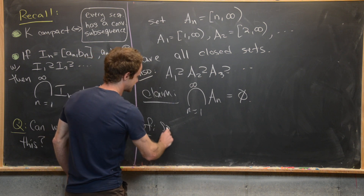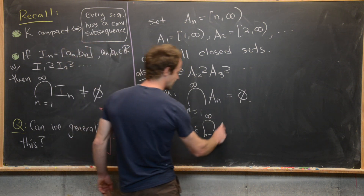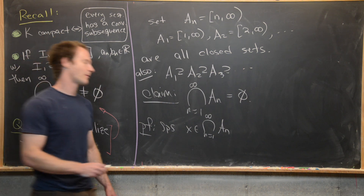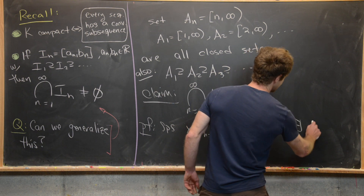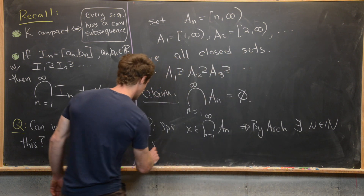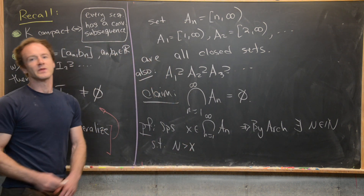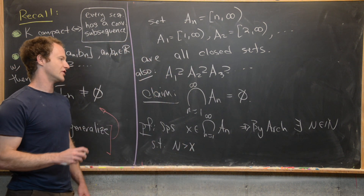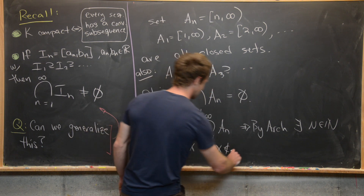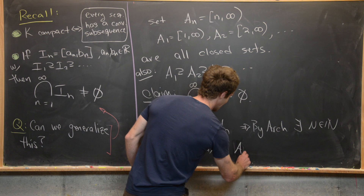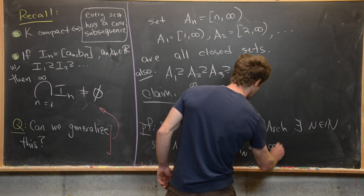Suppose that x is inside the intersection from 1 to infinity of A_n. But by the Archimedean principle, there exists some capital N which is a natural number such that N is strictly bigger than x. I'll let you look that up if you need to. But N being bigger than x tells us that x is not inside the set A_N, which equals the closed interval [N, ∞).